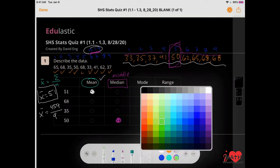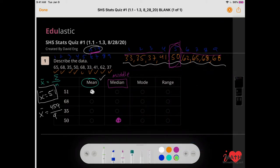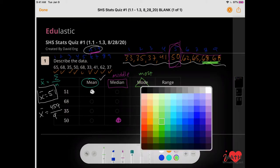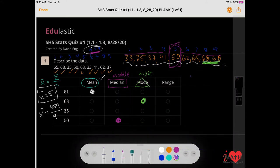What is the mode? Mode is what happens the most. So do you see any repeating numbers? I see 68, so 68 is my mode. And then the last one is the range.